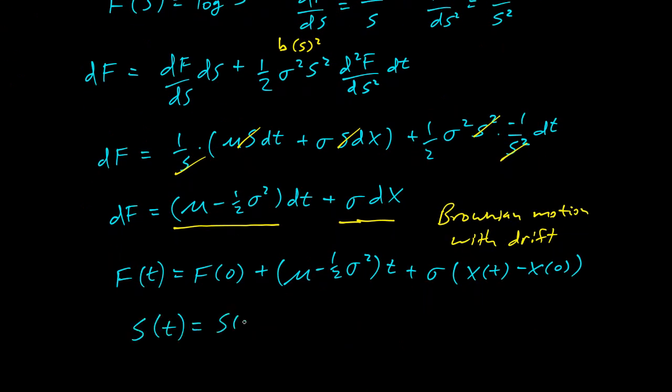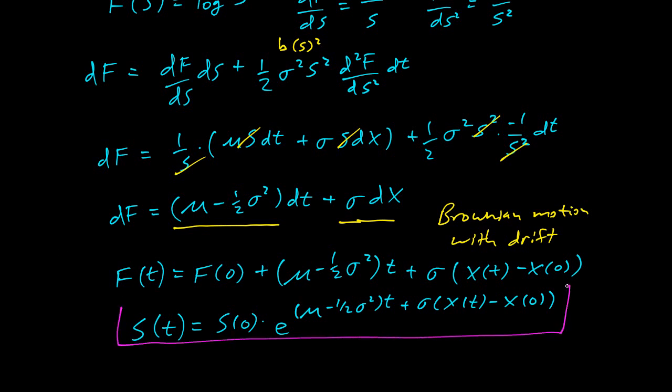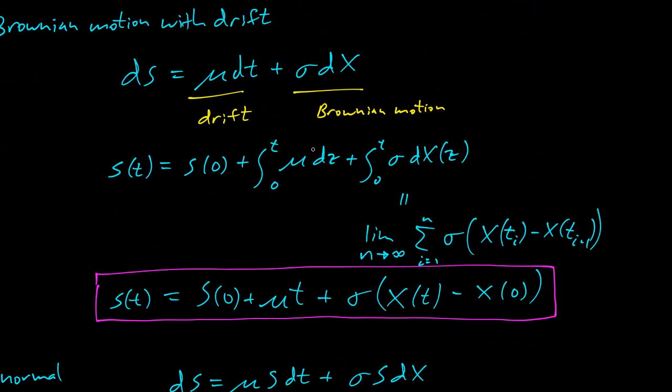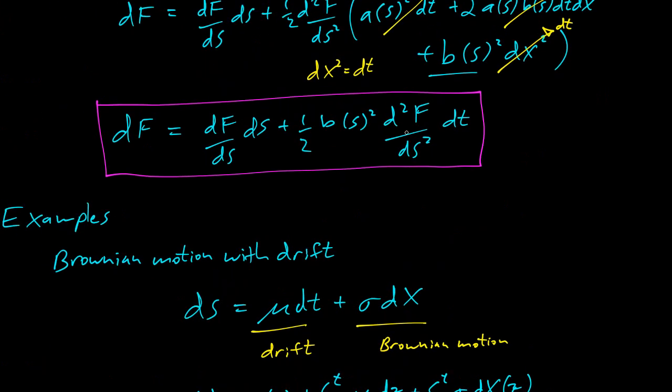Now we have a formula for f. The f is the transformed variable, so we want the formula for s. We have to just do the opposite of log, which is exponent. So s(t) is s(0) times e to the μ minus a half σ² t plus σ x(t) minus x(0). There you go. Here's the solution for log normal. Explicit solution for log normal. We have the explicit solution for Brownian motion with drift and we generalized Ito's lemma.